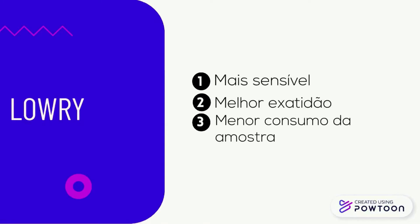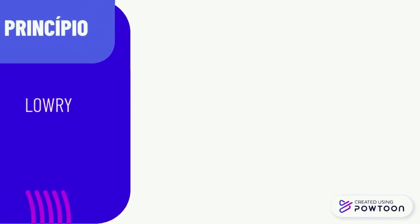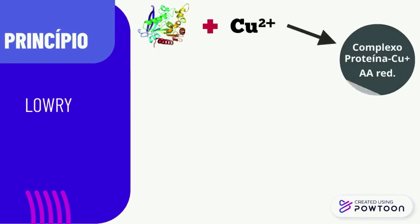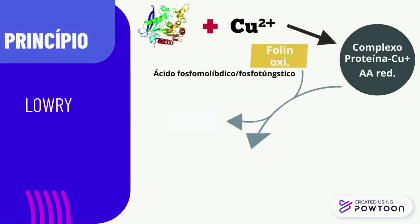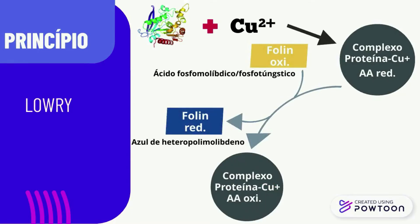Diversos pesquisadores recomendam o uso do Lowry por ser mais sensível. Em decorrência disto, é utilizado para a quantificação de proteínas totais em variados meios. Esse método também tem uma melhor exatidão e um menor consumo da amostra. O princípio deste método baseia-se na redução do reagente Folin. A redução reativa do Folin ocorre por meio de resíduos de tirosina, triptofana e, em menor grau, cisteína e histidina, que estejam envolvidos no complexo com o cobre. O Folin é ácido fosfomolíbdico mais fosfotúngstico, sendo de cor amarela e que, após a redução, irá expressar a cor azul. Para a leitura do Folin, utilizamos um comprimento de onda de 720 nanômetros.